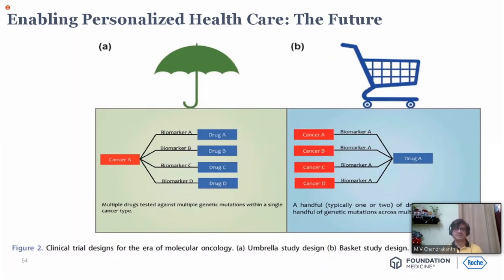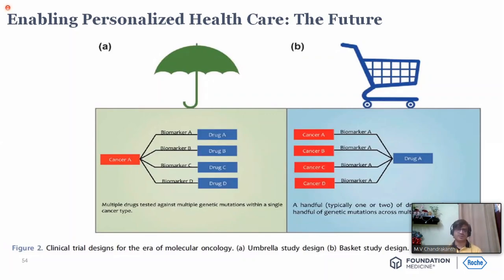We are slowly changing from a tissue-based testing approach — initially organ of origin, then histology (adeno vs. squamous), now looking at the mutation, and now going to what is known as a tissue-agnostic approach. MSI-high, irrespective of histology or tumor type; NTRK fusion positive, irrespective of tumor — these are the tissue-agnostic indications we now have.